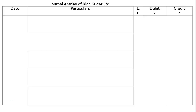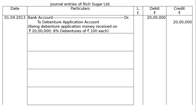The question is: Rich Sugar Limited issued Rs 20,08,000 debentures divided into debentures of Rs 100 each on 1st April 2013, redeemable in 4 equal installments starting from 31st March 2016. Draw the journal entries of Rich Sugar Limited in the journal format, starting from the date 1st April 2013.